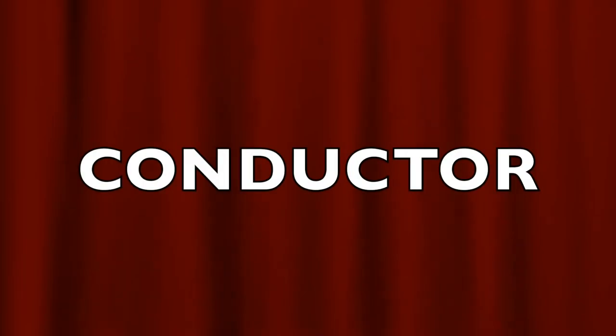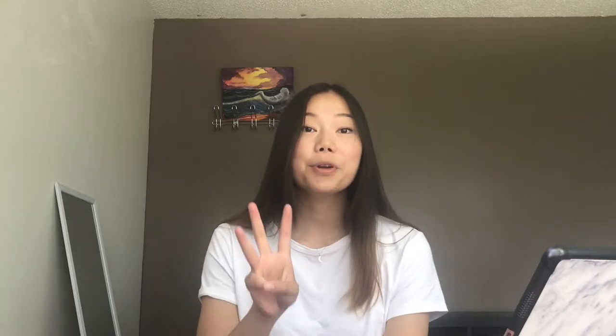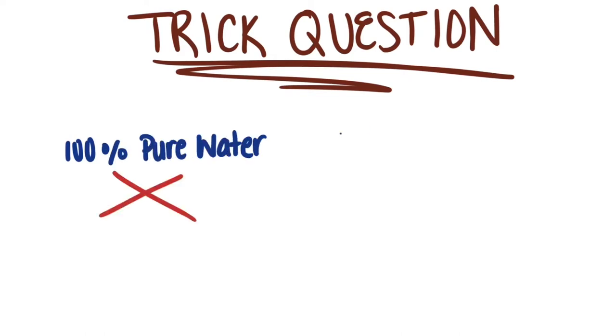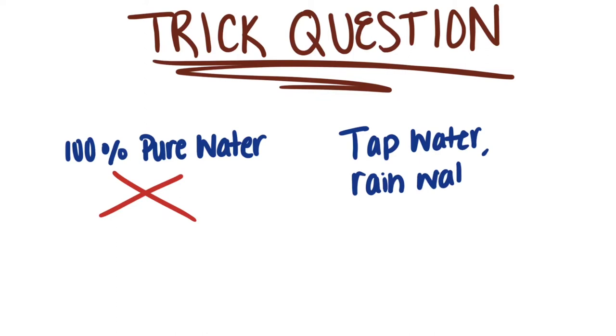Now let's play a little game. I'm going to name a material and give you three seconds to guess if it's a conductor or an insulator. Number one: tinfoil. Number two: diamonds. Number three: a toothpick. Number four: copper. Number five: water — this is actually a trick question. 100% pure water does not conduct electricity. However, tap water, rainwater, and most of the water we use does conduct electricity because it has other minerals in it, such as calcium and sodium ions.